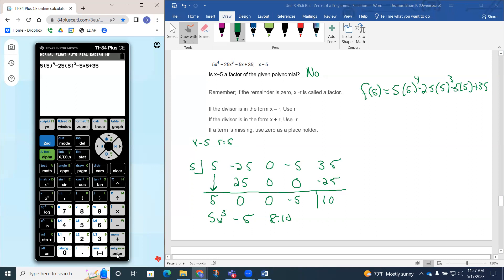And we're supposed to get a remainder of 10. So that does check out. So we did do our synthetic division correctly.